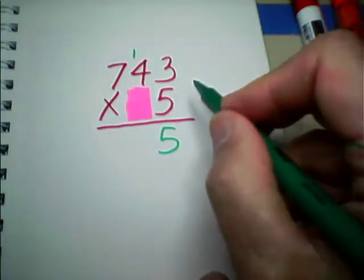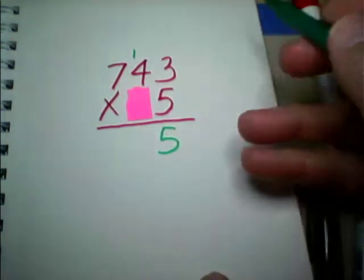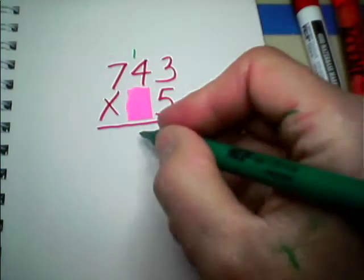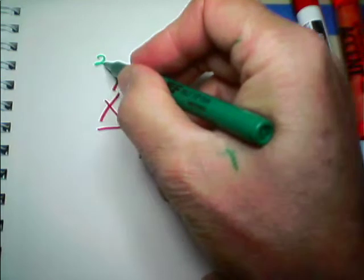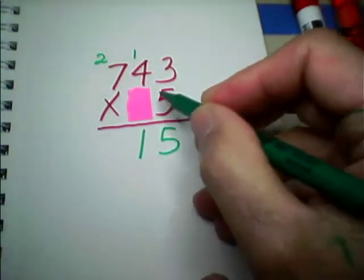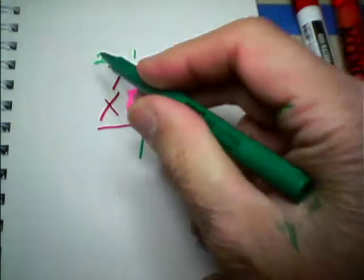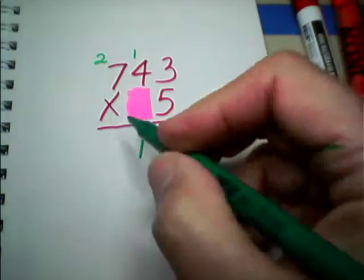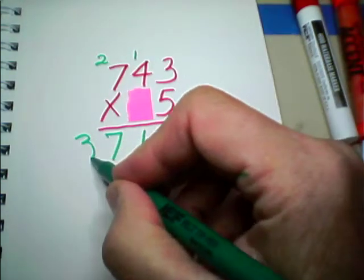5 times 4 is 20. 20 plus the 1 that's resting. 20 plus 1 is 21. So we'll write down the 1 from the 21 there. We carry the 2 from the 21 over here, and we give it a rest. 5 times 7 is 35, plus the 2 that's resting. 35 plus 2 is 37. So there's my 37.